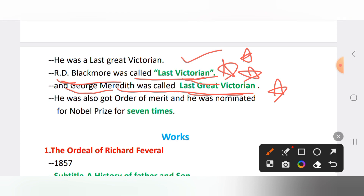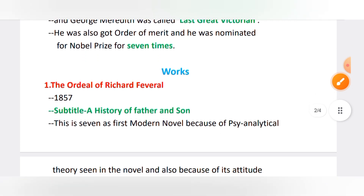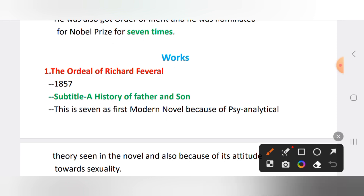He also received the Order of Merit and was nominated for the Nobel Prize seven times. This is a great achievement — his name was recommended seven times during the Victorian age, when Nobel Prizes had just started.